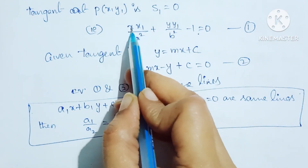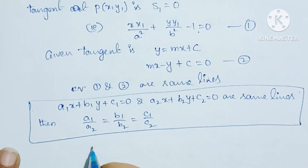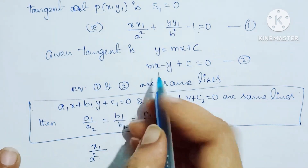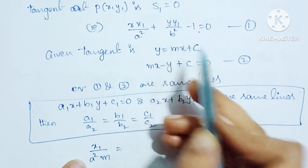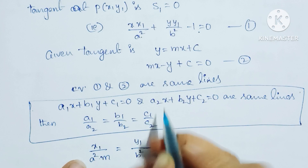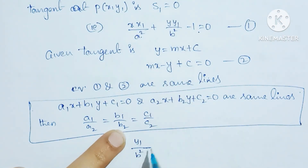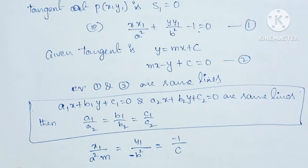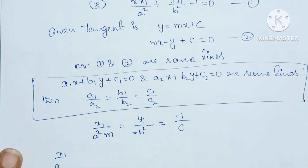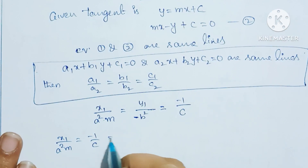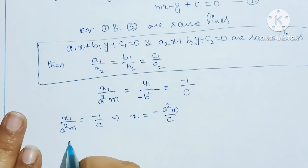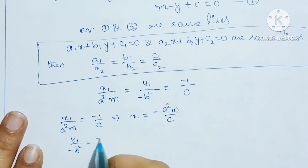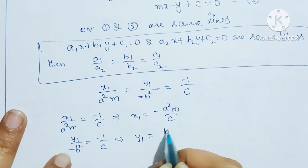Comparing the equations: the x coefficient ratio gives x1 by a square over m equal to minus 1 by c, which implies x1 equal to minus a square m by c. Next, the y coefficient ratio gives y1 by minus b square equal to minus 1 by c, which implies y1 equal to b square by c.